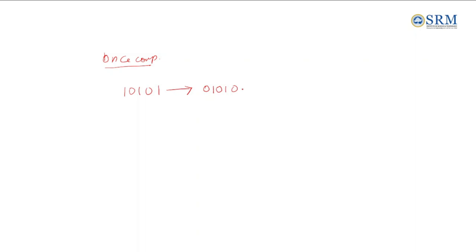That is the one's complement of the given value. For one more example, if the value is 10, the one's complement will be 01. This is all about one's complement.